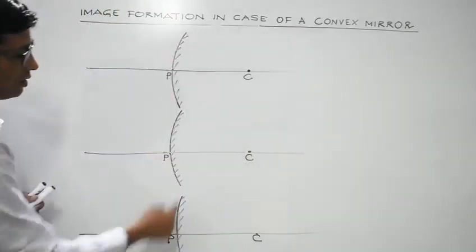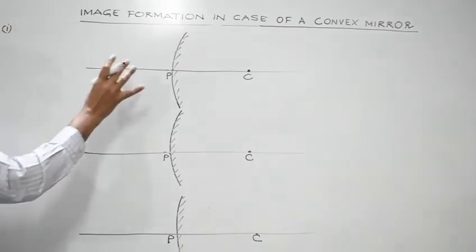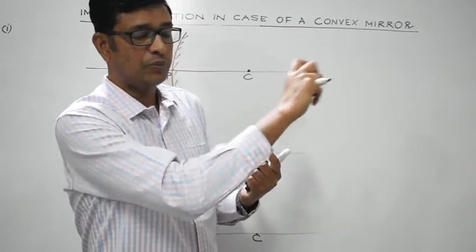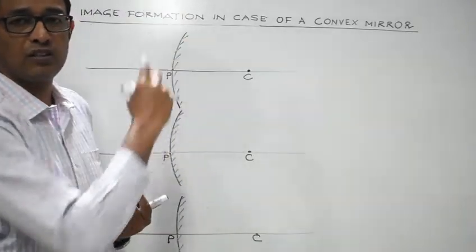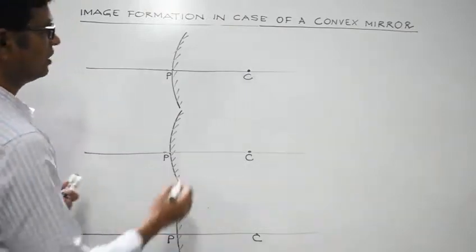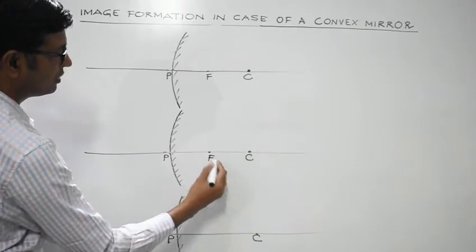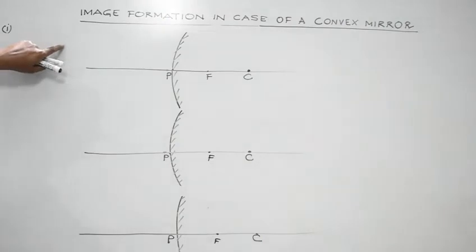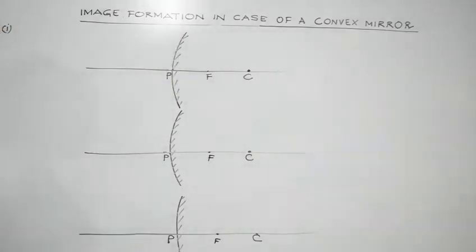Case 1: the object is placed at infinity. Whenever rays are parallel to the principal axis, in the case of a convex mirror it appears as if the rays are coming from the focus. That is why the convex mirror is known as a diverging mirror. The focus is the midpoint between the pole and the center of curvature. So in case 1, rays from the object are parallel to the principal axis.